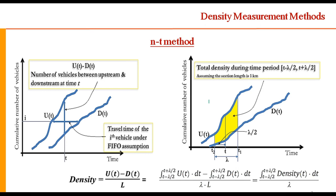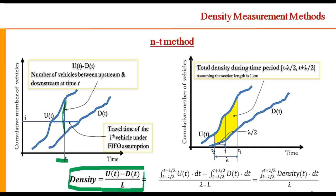In the NT method, we draw the cumulative arrival and departure of vehicles at the upstream and downstream ends of the trap length. You draw a trap length on the highway using automatic loop detectors, count the number of vehicles at the upstream point with time, and count the number of vehicles at the downstream point with time. On a plot of cumulative number of vehicles on the y-axis and time on the x-axis, the vertical distance between the two curves at any time t gives the number of vehicles in the trap, which is the instantaneous density.